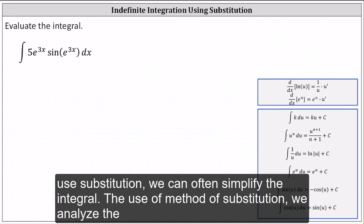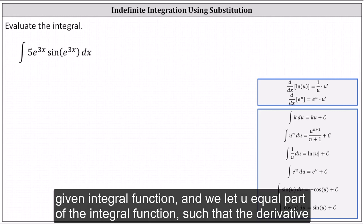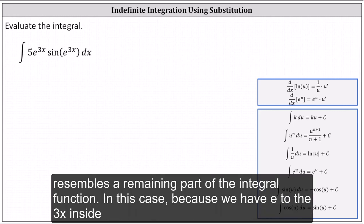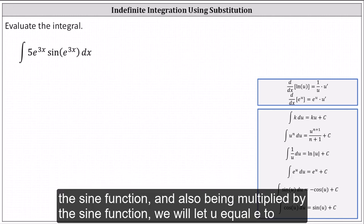To use the method of substitution, we analyze the given integrand function and we let u equal part of the integrand function such that the derivative resembles a remaining part of the integrand function. In this case, because we have e to the 3x inside the sine function and also being multiplied by the sine function, we will let u equal e to the 3x.